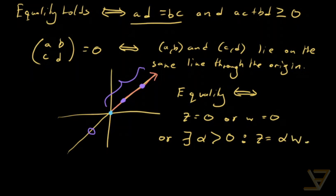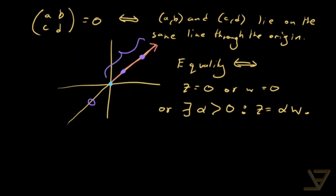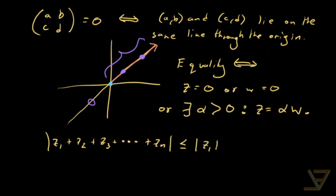You can extend this theorem to n complex numbers: |z₁ + z₂ + z₃ + ... + zₙ| ≤ |z₁| + |z₂| + ... + |zₙ|.